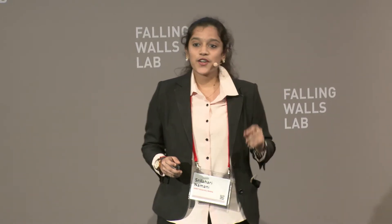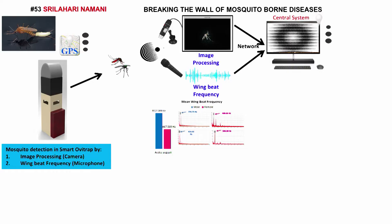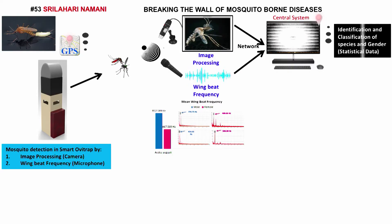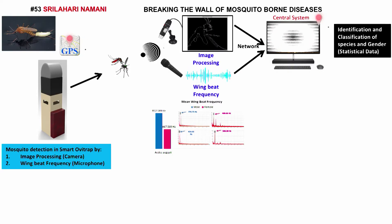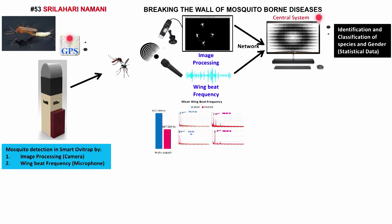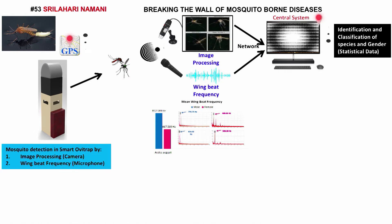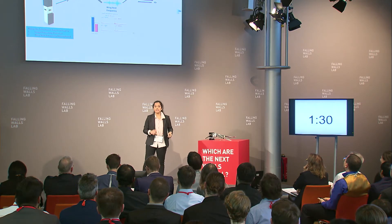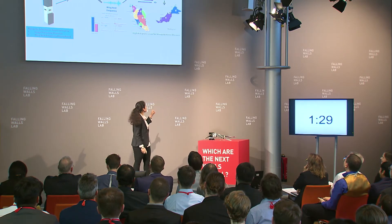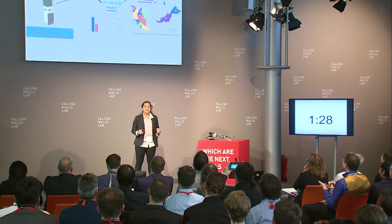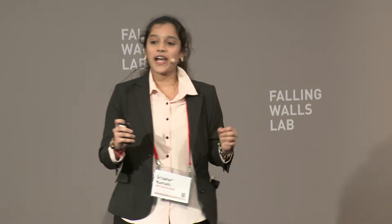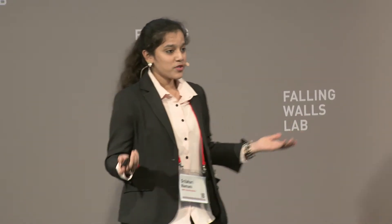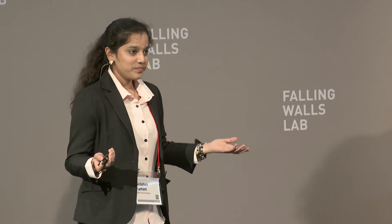The GPS location of the Ovi-Traps are tracked at the central system, and the statistical data obtained from different Ovi-Traps is analyzed to predict the outbreak and high-risk areas, which are then highlighted on the maps. Currently, this project is planned to be implemented in Malaysia and can possibly be adopted to the rest of the world.